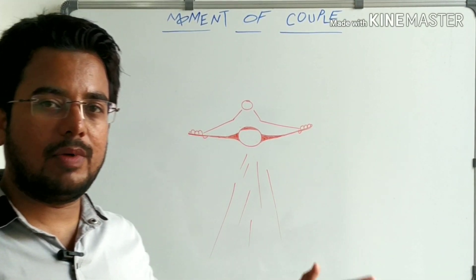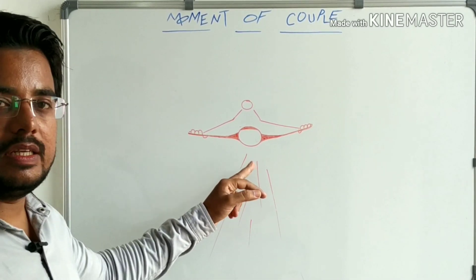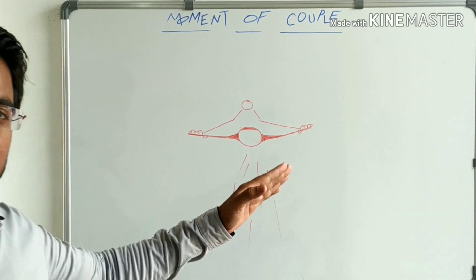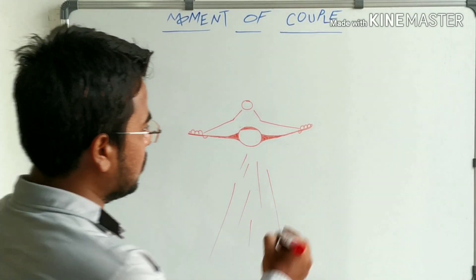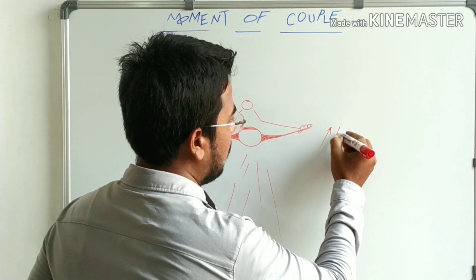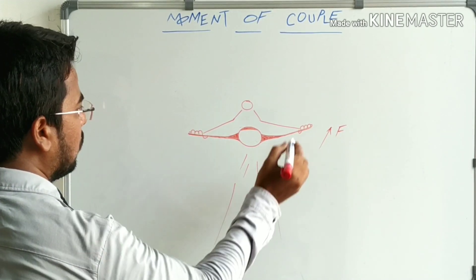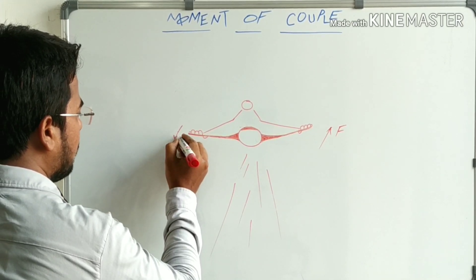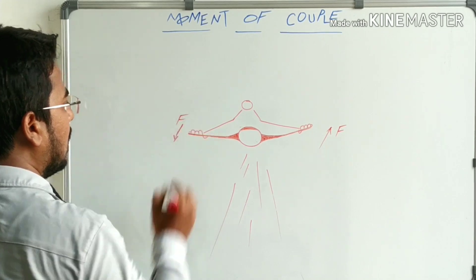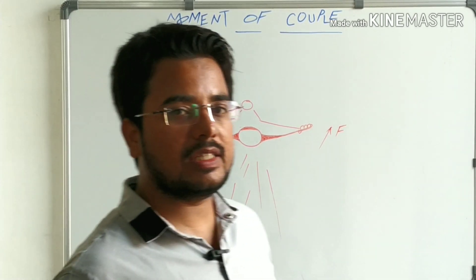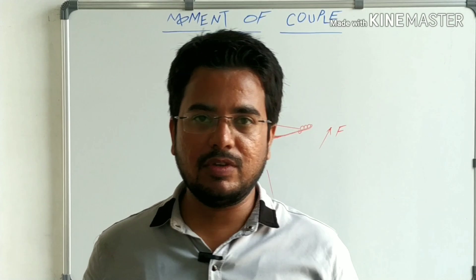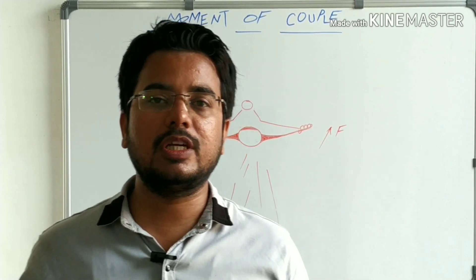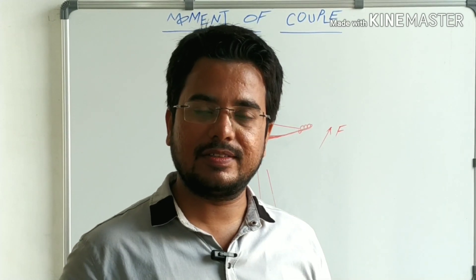Let us take the example of a bike handle. You see it is pivoted near its headlight. When we turn the bike, we need to apply forces of equal magnitude but in opposite direction. If we turn the bike in this direction, we need to apply force F, and the same equal and opposite force needs to be applied at the other point. Another example we can take is the steering of a car. When we turn the steering of a car, a force of equal magnitude is needed to turn the steering in the opposite direction.